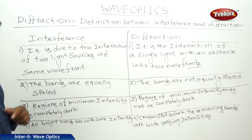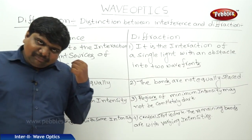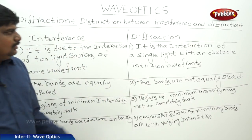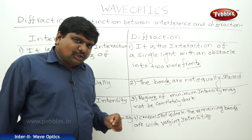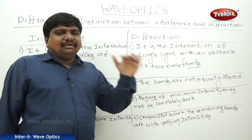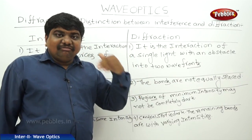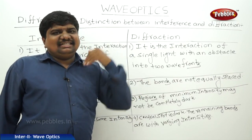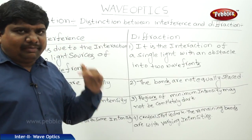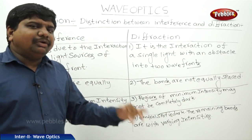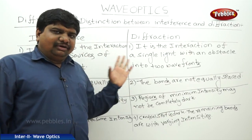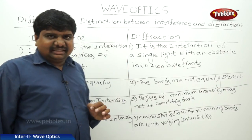In interference, all bright bands are of the same intensity. But in diffraction, the central spot is fully dark and there is also varying intensity in the remaining bands. These are the key differences between interference and diffraction.